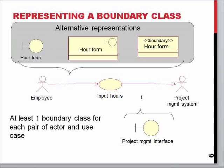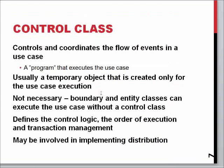In a quick example, a form is one sort of boundary — it sends the employee information to the system, which is then processed by the input hours control class. The control class is the actual class where all the action happens; it usually contains all the actual functionality of the program.